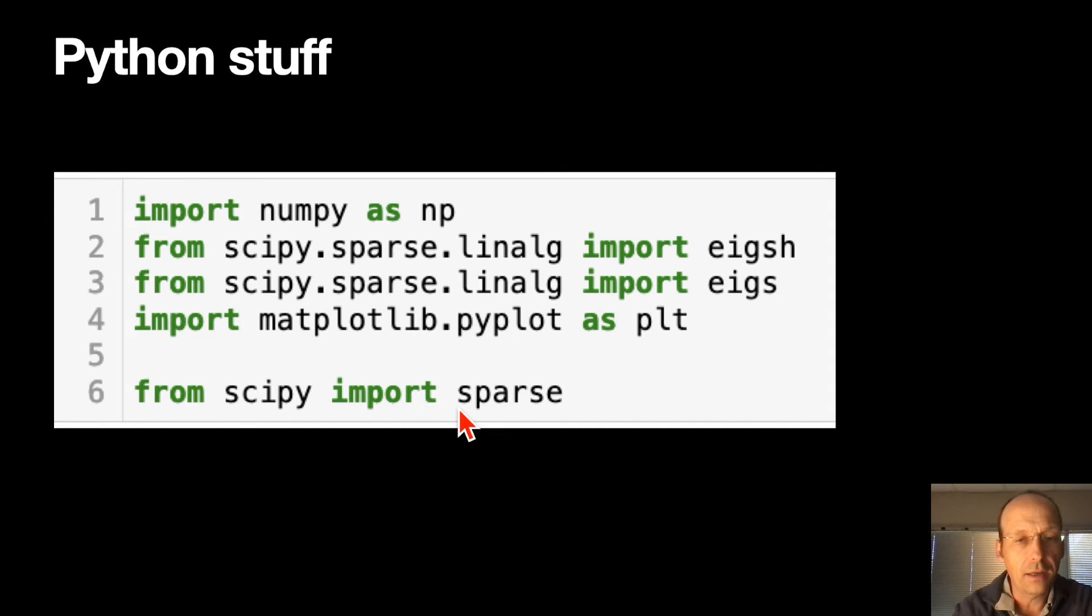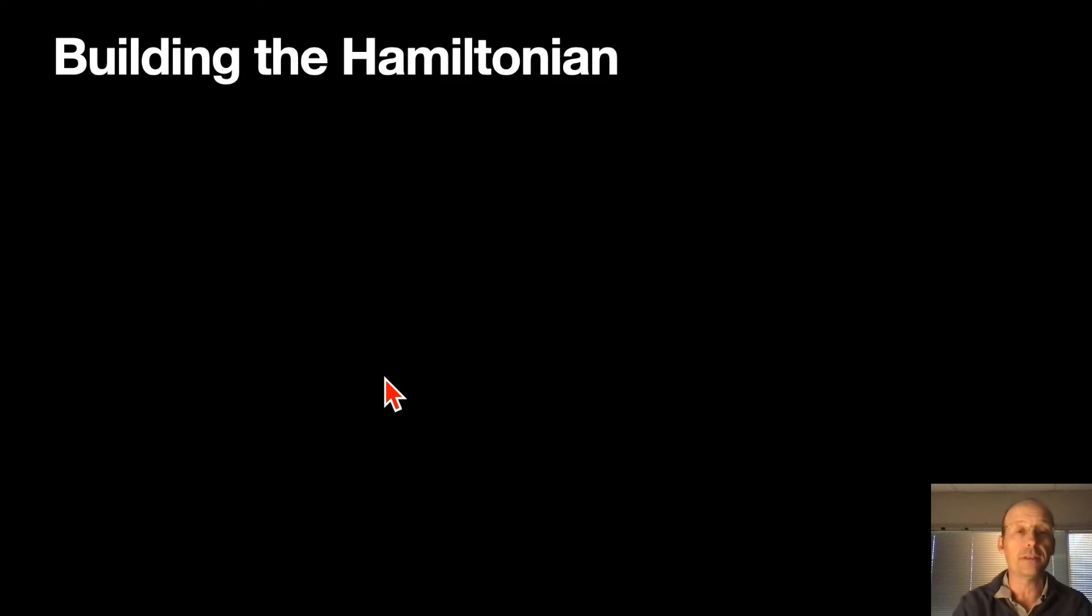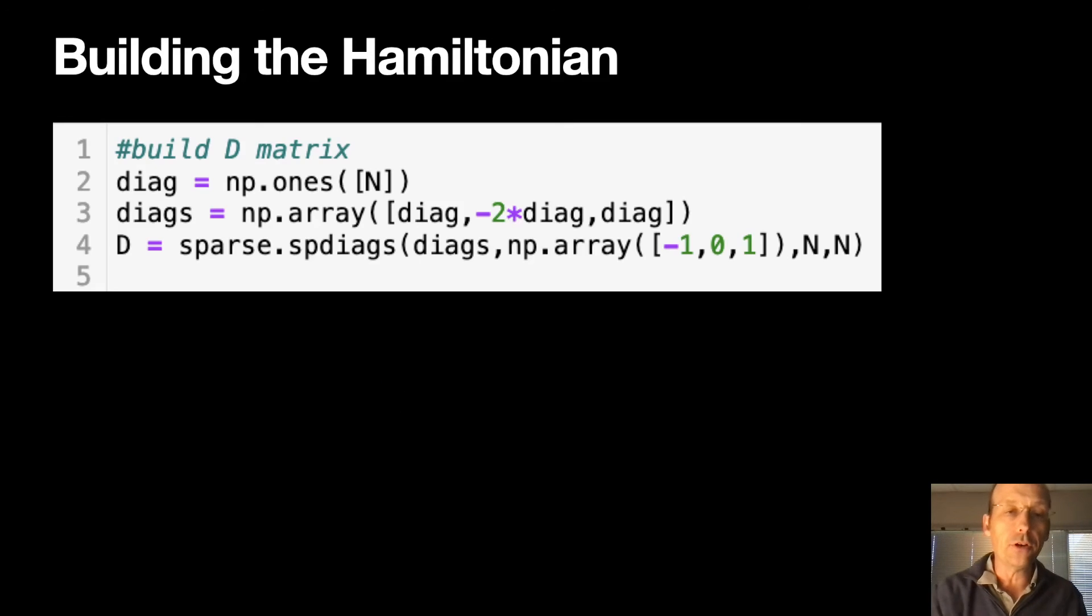That's for plotting. I'm not sure why that's in there twice. But I just did what someone else did. Now we can build the Hamiltonian. This part, I don't know what I'm doing. But it doesn't matter, because once we build that, the only thing that we're going to change are our space values and our potential.